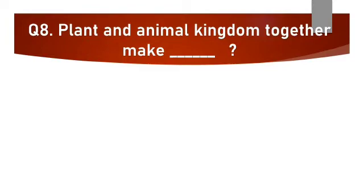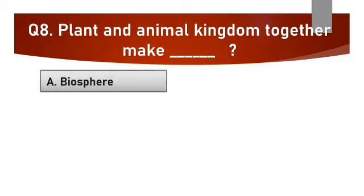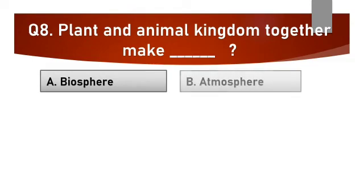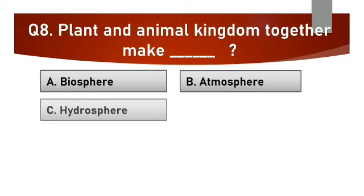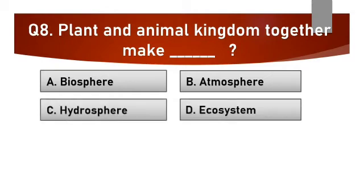Question number 8. Plant and animal kingdom together make dash. Options are A. Biosphere, B. Atmosphere, C. Hydrosphere, D. Ecosystem.